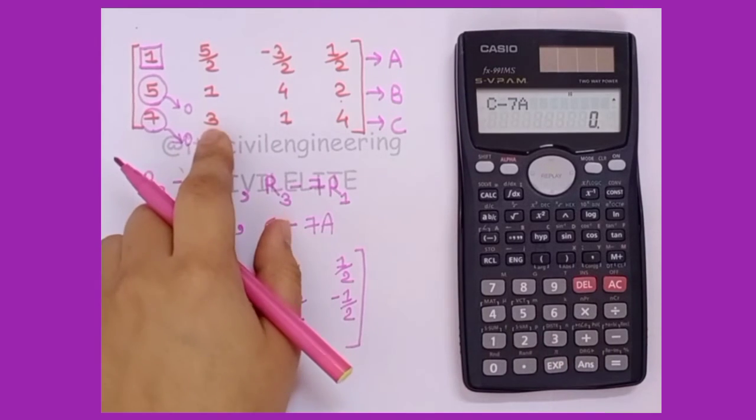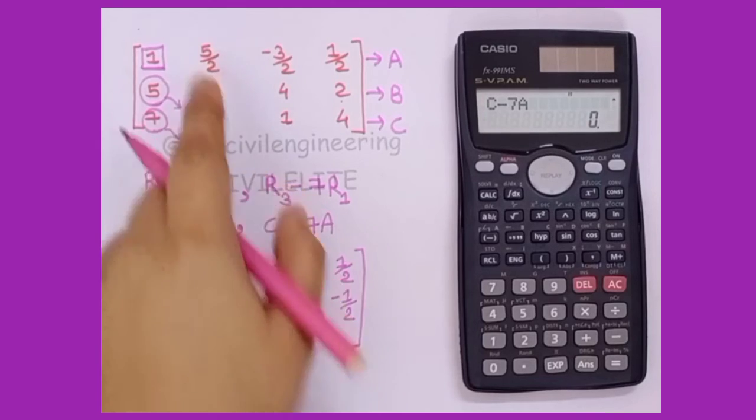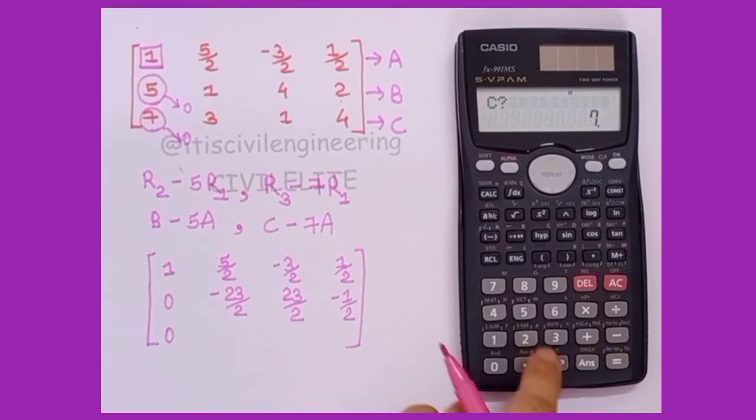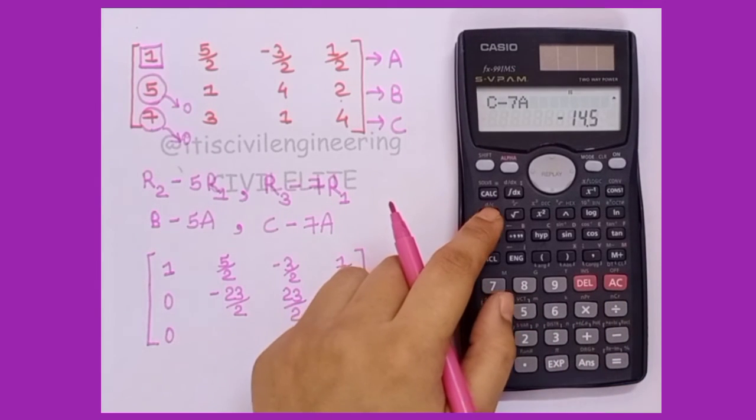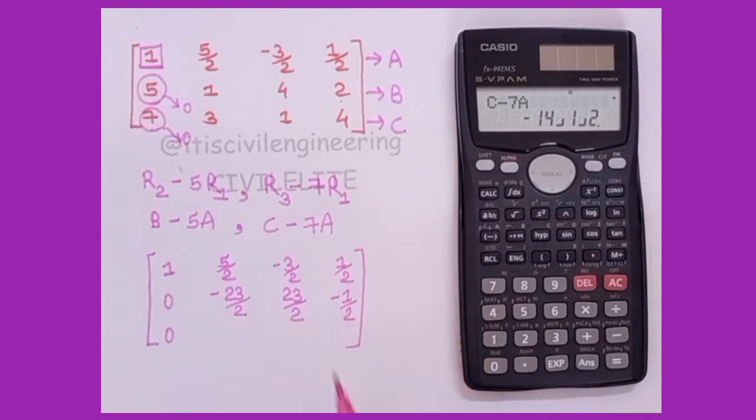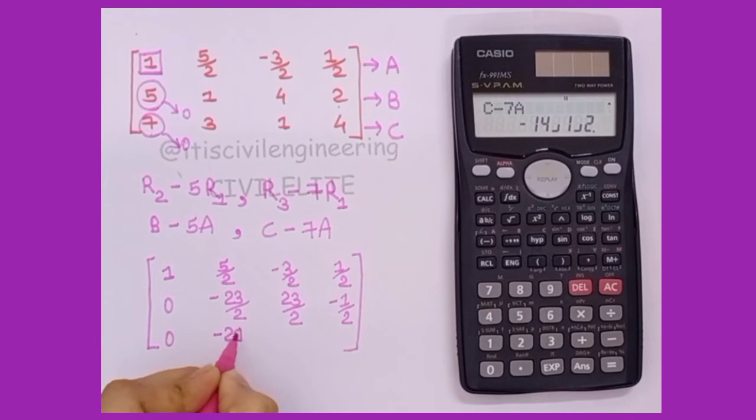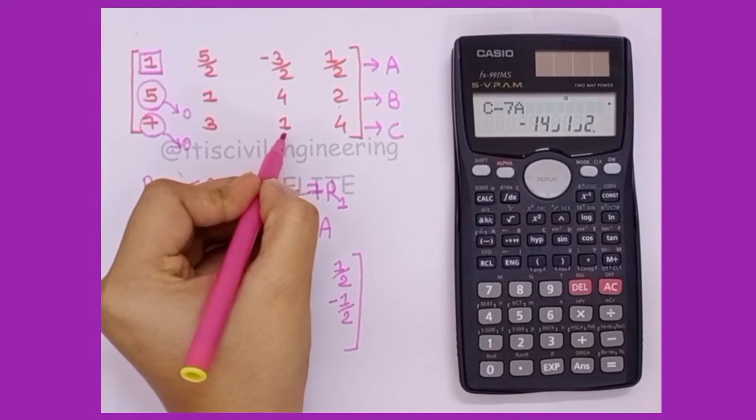Then the next one we have 3 and 5 by 2, equal to equal to equal to. We get it as minus 14.5. Again I'll press a b by c, which is minus 14 integer 1 by 2, that is minus 29 by 2.